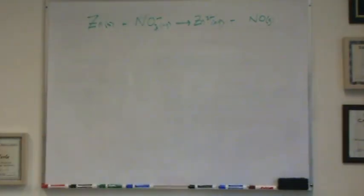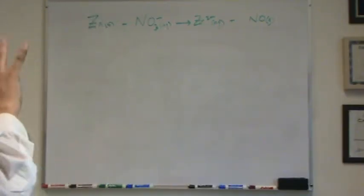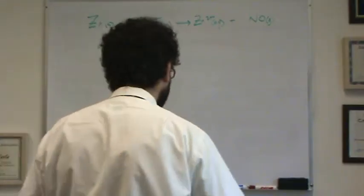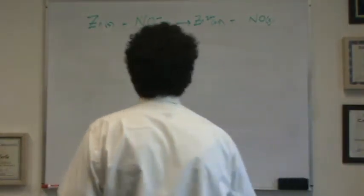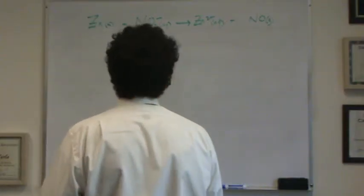To balance this, we're going to follow our set of rules that we knew from before. We're going to split this up into half reactions, balance it, and then put it back together. This is a redox type reaction. Let's look at the charges first. This is what really indicates that it's a redox.